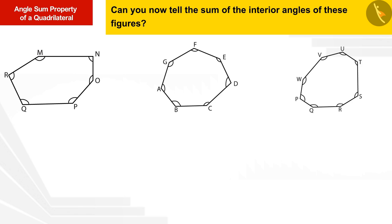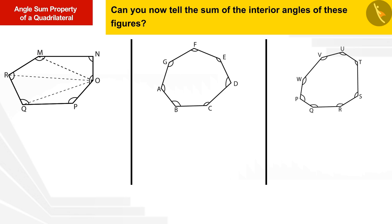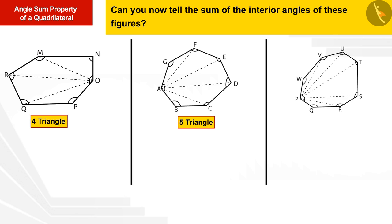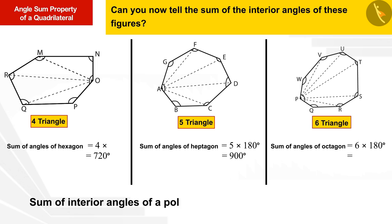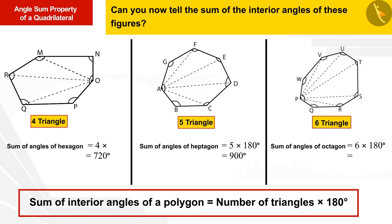In the same way we can divide the hexagon, heptagon, and octagon into triangles and find the sum of their angles. By making diagonals, four triangles are formed in the hexagon, five in the heptagon, and six triangles in an octagon. When we multiply the number of triangles by 180 degrees, we get the sum of all interior angles of that polygon.